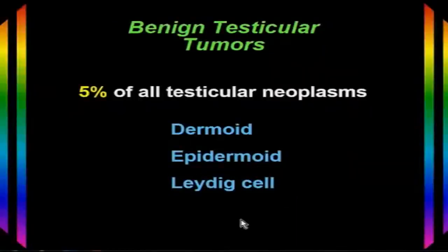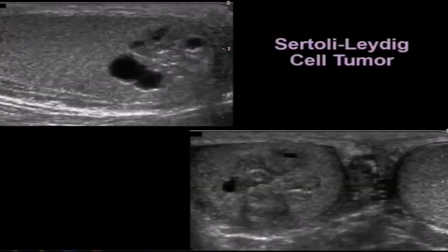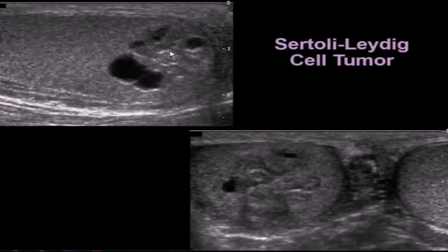About 5% of intratesticular tumors are benign lesions. When they are benign, they're typically dermoids, epidermoids, or Leydig cell tumors. Here we can see a Sertoli Leydig cell tumor that was benign but has the same appearance as testicular cancers — it's a well-defined lesion in the lower pole of the testicle with some cystic areas but mostly solid.